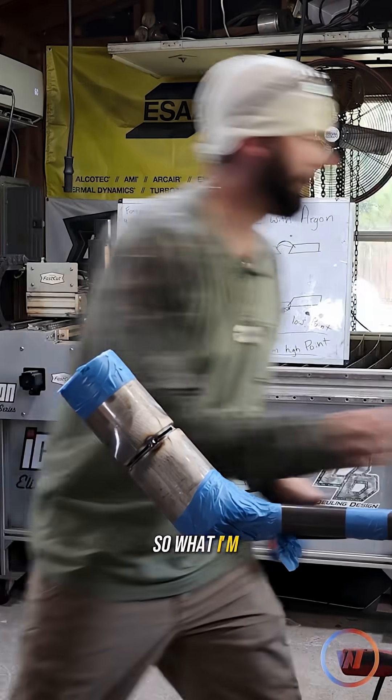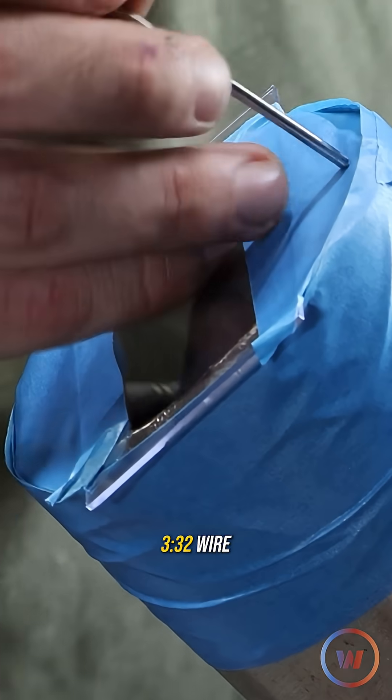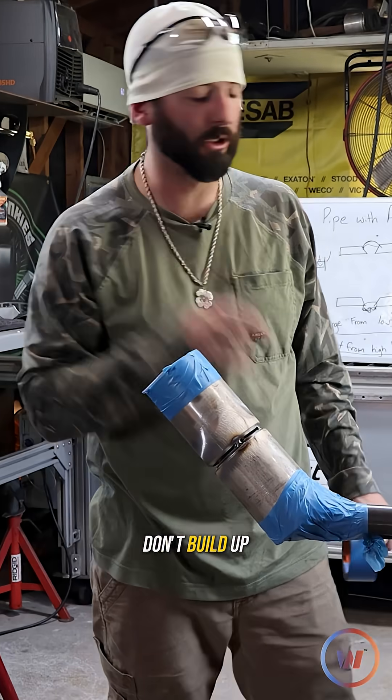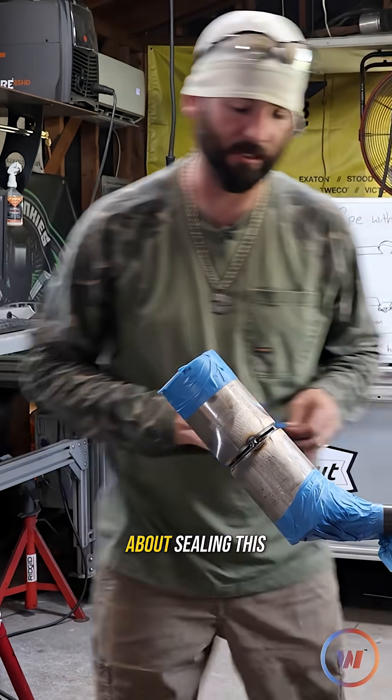We're going to want a vent hole this time, so what I'm going to do is take a piece of 332 wire, the same wire I'm going to root with, and pop a couple little holes here at the top so that we don't build up any pressure as we go about sealing this root in.